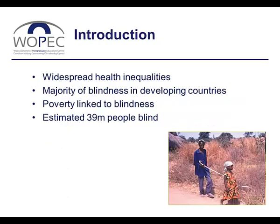Despite technological advances, we still live in a world in which health inequalities are widespread and very large numbers of people are living with sight loss. Much of this blindness is in sub-Saharan Africa, although most of the world's poor now live in middle-income countries where inequality is greatest. Poverty and blindness are intimately linked, with poverty predisposing to blindness and blindness exacerbating poverty.